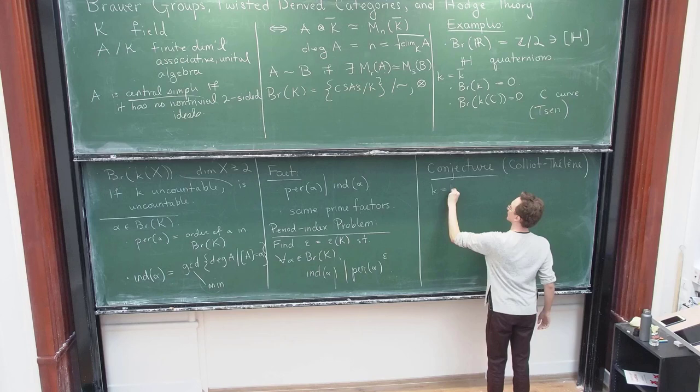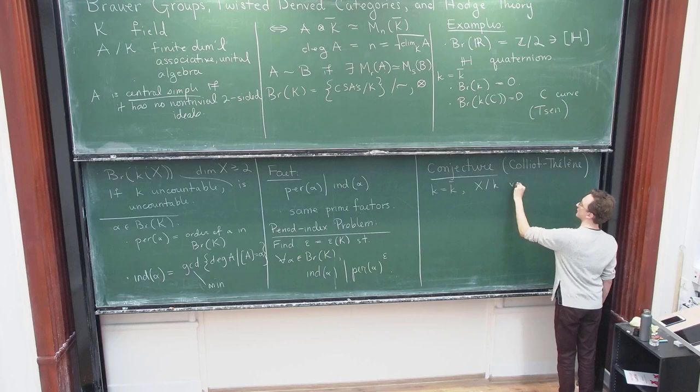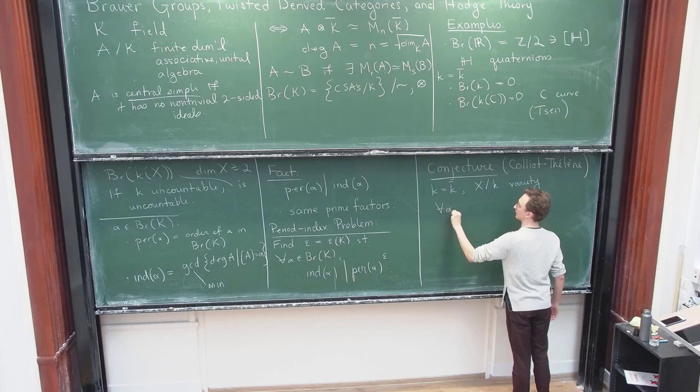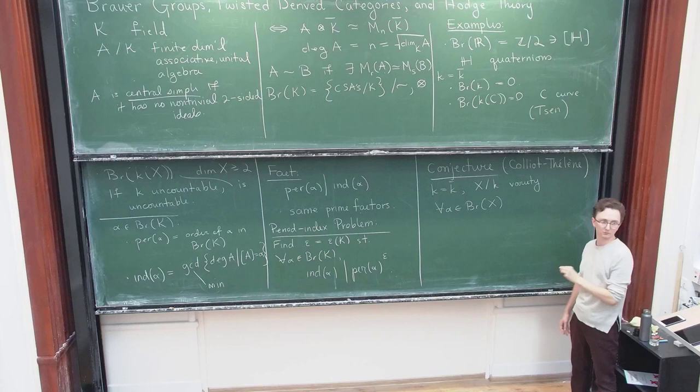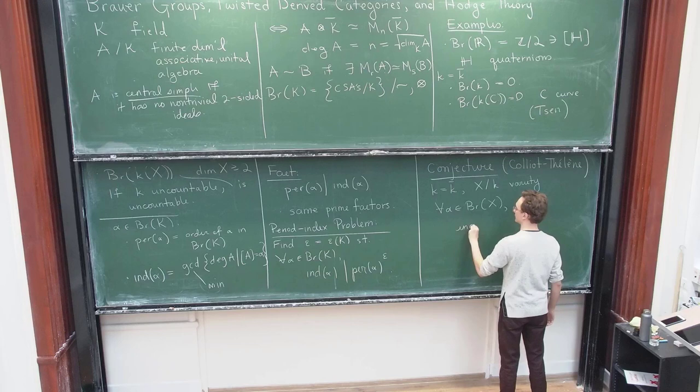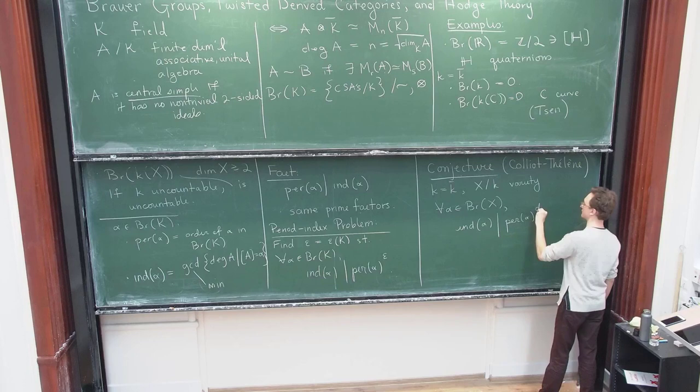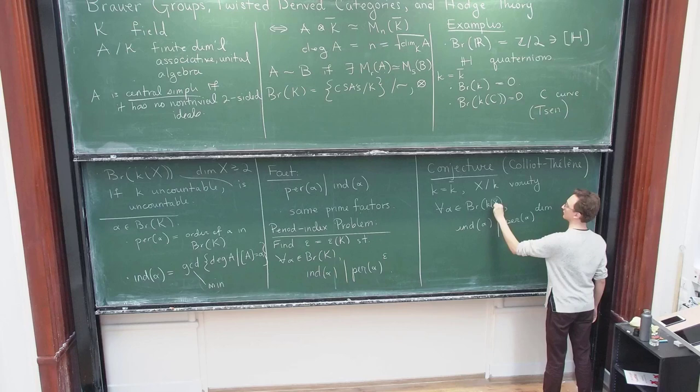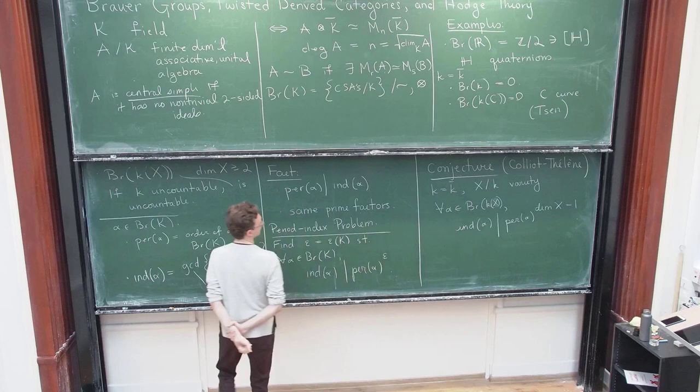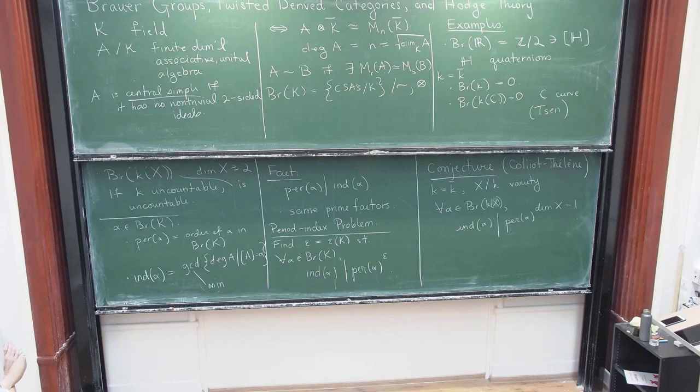So the conjecture is the following. So again, I'll take an algebraically closed base field and I'll just take some variety, and the conjecture is that for any element of the Brouwer group, and we saw earlier this Brouwer group can be quite large. For any element of the Brouwer group, one has that the index divides the period to the dimension minus one. Do you want K of X instead of this X in this formulation? In other words, you can take epsilon to the dimension of X minus one. So this is the conjecture.